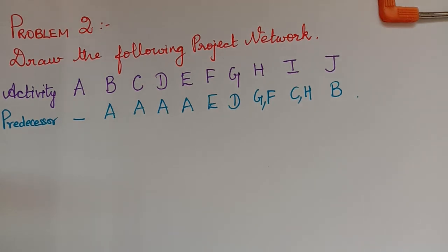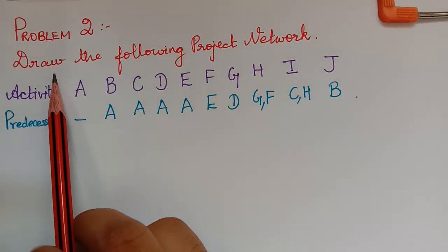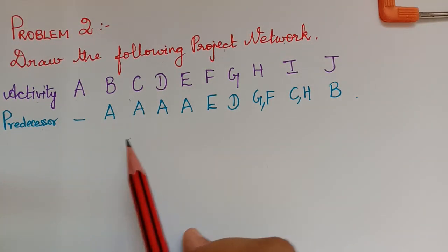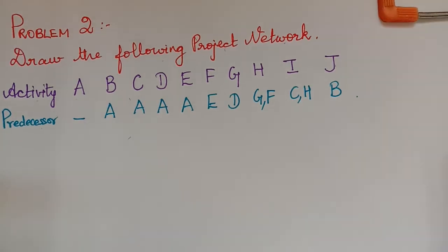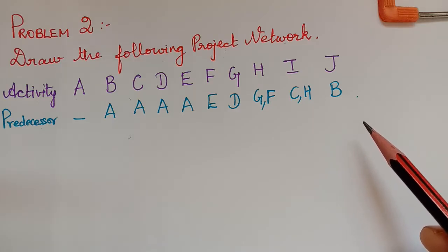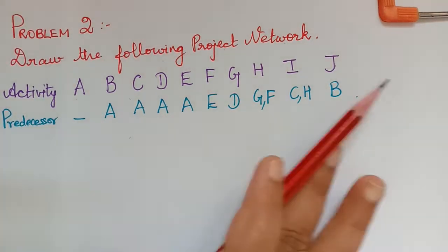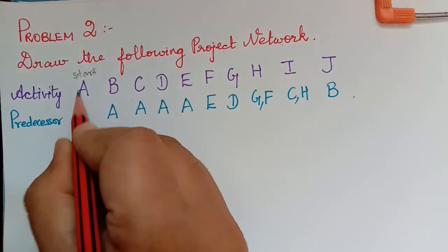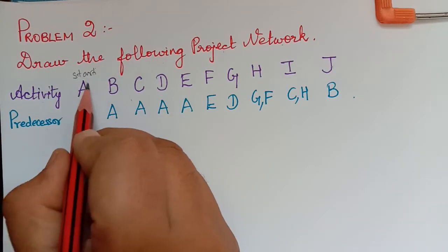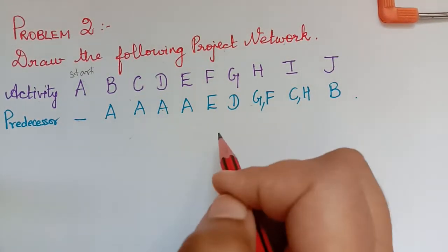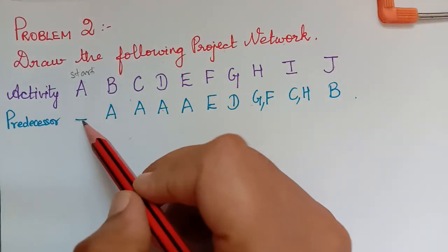Under the topic of project networks, we have a problem: draw the following project network. The activities and their predecessors are given. The first step is to decide which are the starting activities, and the second step is to decide which are the ending activities. The starting activities will not have a predecessor. Activity A has no predecessor, so it is the only starting activity.